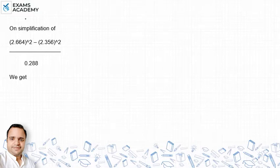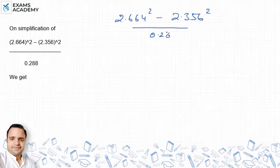Hello friends, we are going to solve this problem. What is the question? Simplifying 2.664 squared minus 2.356 squared divided by 0.288, we get what? The expression is 2.664 squared minus 2.356 squared divided by 0.288.